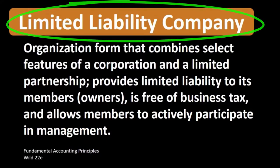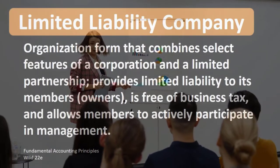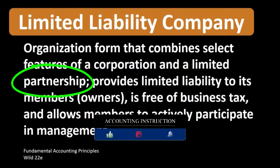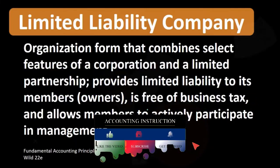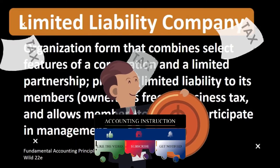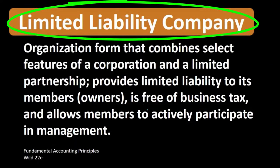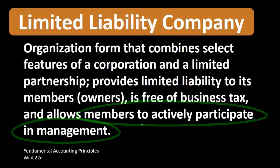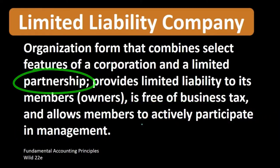When we think about a limited liability company, we're thinking about getting the best of both worlds — a traditional C corporation and a pass-through entity such as a partnership. This includes the idea of having free business tax, meaning the tax will not be assessed on the business level but will flow through to the individual level, a feature generally of a general partnership, and allowing members to actively participate in management, a feature often associated with a partnership.